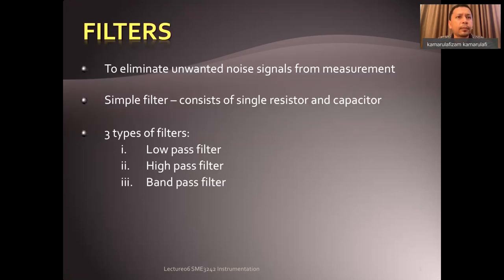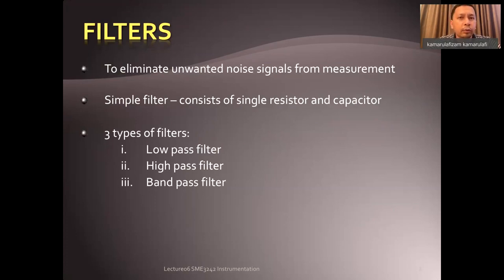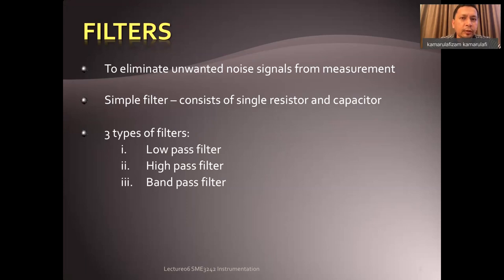We need filters to eliminate unwanted noise from whatever sensor or measurement we are doing. In any system of measurement, we are measuring some parameters together with noise. So filters are used to get the information and remove the noise. A simple filter consists of just a single resistor and capacitor — just two basic components. You can set the values according to what frequency and gain you want the system to work with.